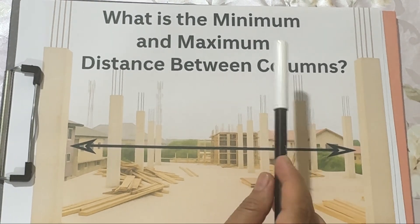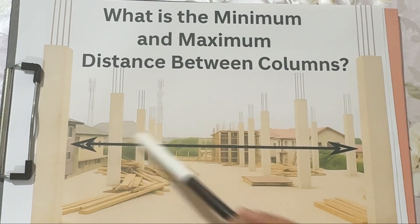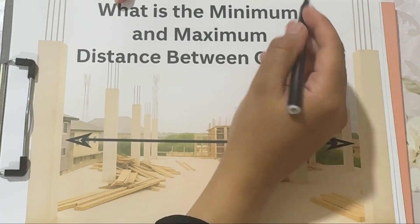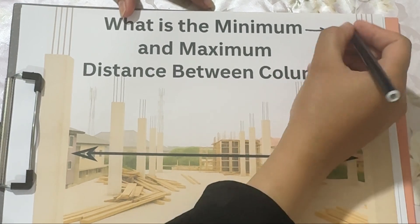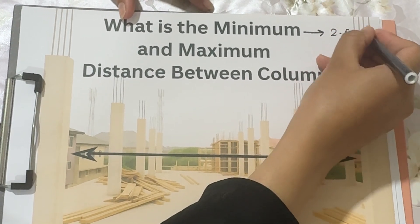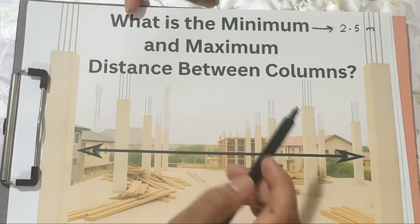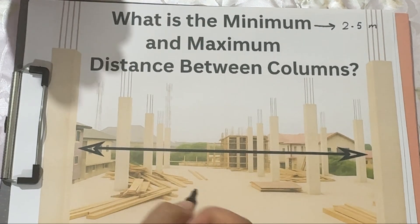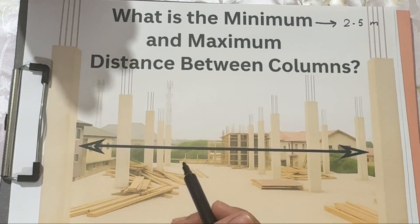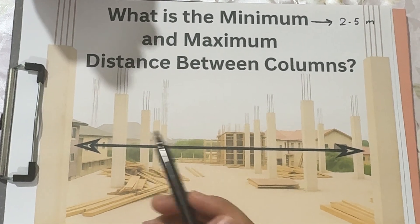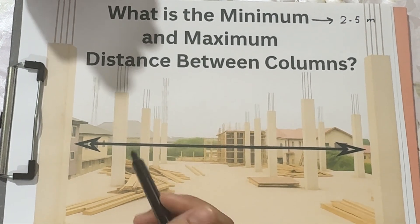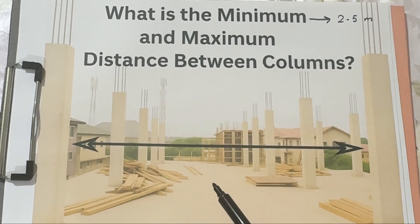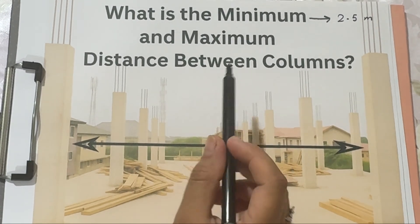Part 3: Minimum distance between columns. Let's talk numbers. The minimum spacing between two reinforced concrete columns is usually around 2.5 meters — about 8 feet. Why not closer? Because placing columns too close increases the number of columns, which makes the structure more expensive and reduces usable space.